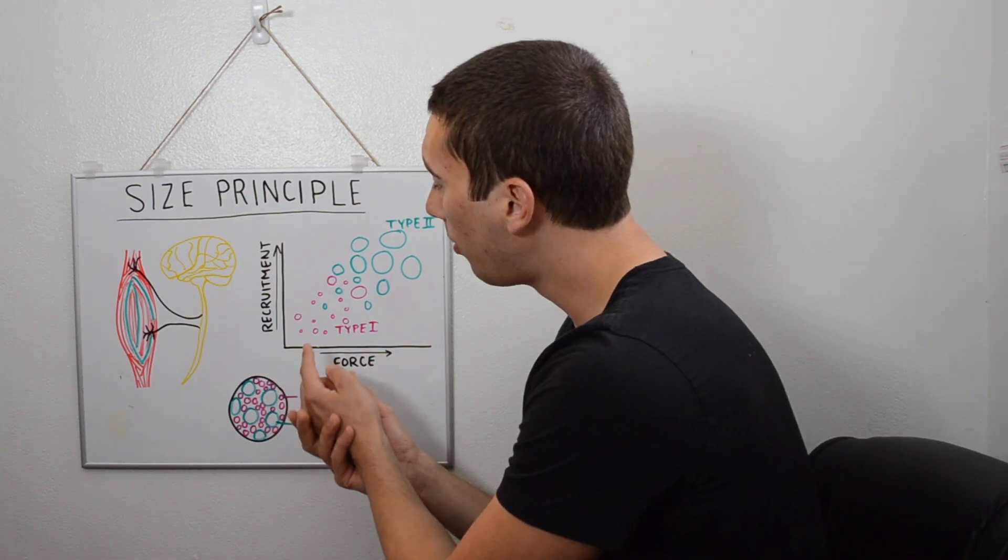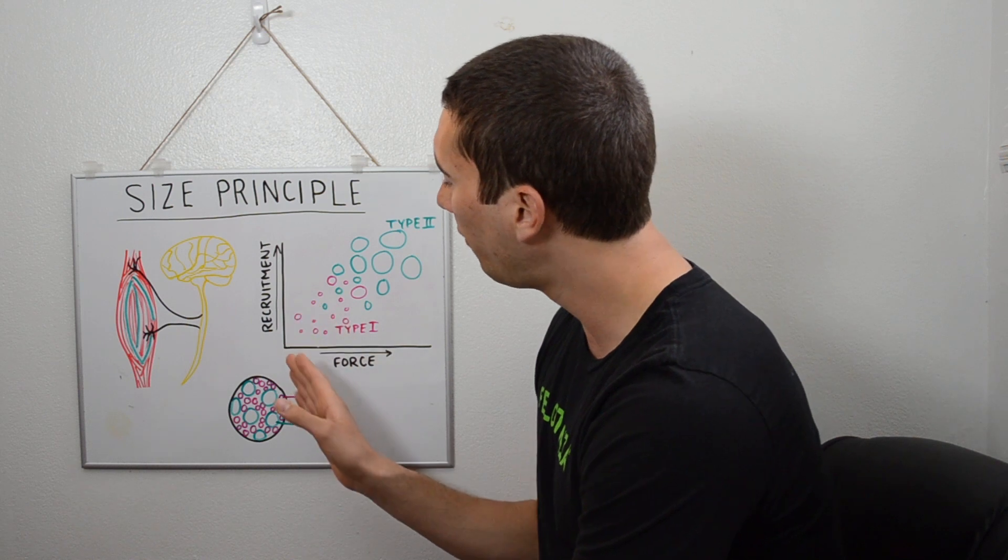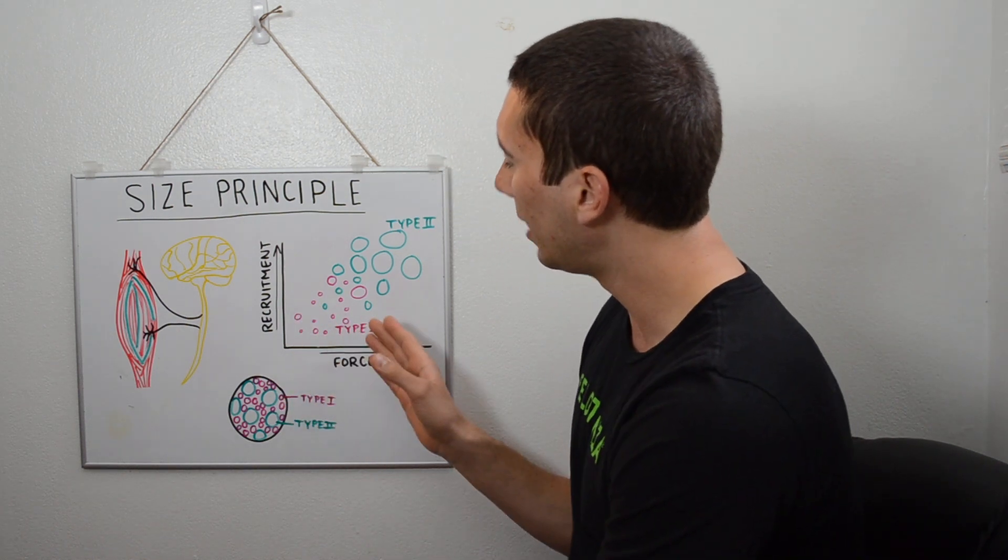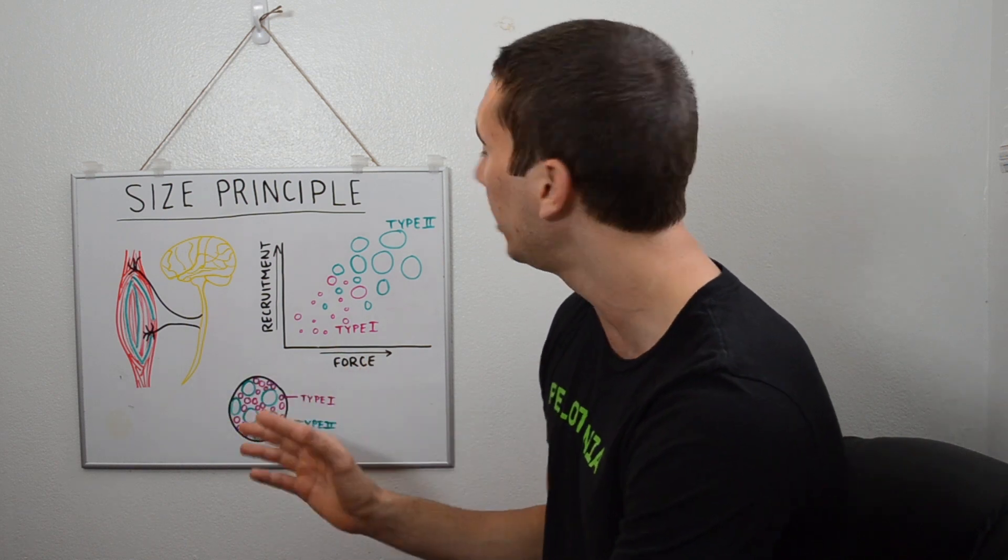So to review, we have our type 1 fibers activated first for low threshold and low force activities, followed by the type 2a fibers that start to get activated in that medium like 10 rep max, 5 rep max type range.